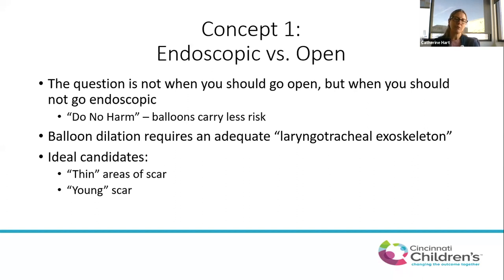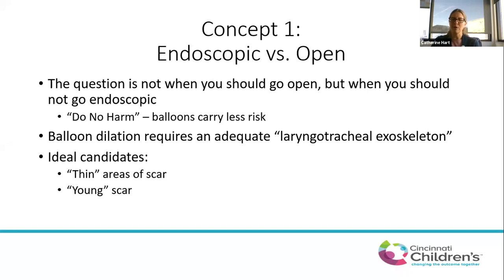Balloon dilation is a mainstay of endoscopic intervention for stenosis. To get a good result, you need an adequate laryngotracheal exoskeleton. If you're going to go endoscopic, a couple of key things to consider are the nature of the scar — what type is it? Thin or young scar tends to respond best to this sort of intervention.